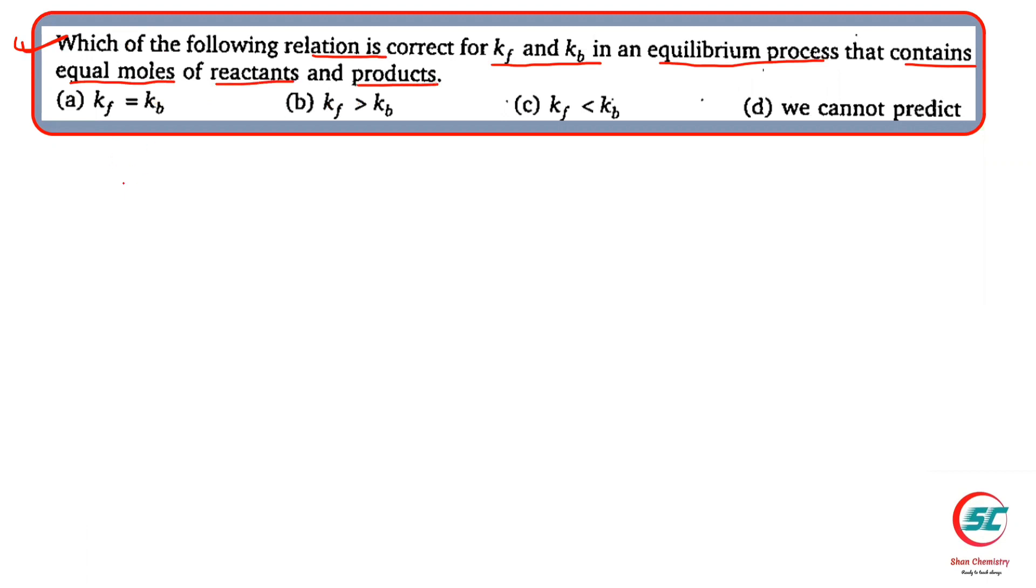You have to have an equilibrium reaction, so reactant goes to product. If you have a forward reaction rate, then it will be k forward, and backward, it will be k backward.